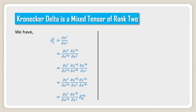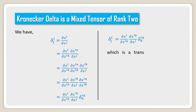In the next line, del x^i divided by del x'^a into del x'^b by del x^j, and the third term is written in terms of Kronecker delta as delta'^a_b, where a is the upper suffix and b is the lower suffix. Therefore delta i^j is equal to del x^i by del x'^a into del x'^b by del x^j into delta'^a_b.